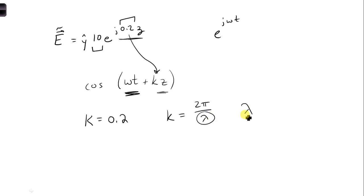So we can solve for lambda, which is 2 pi over k, which is 2 pi over 0.2, and that turns out to be 31.42 meters.